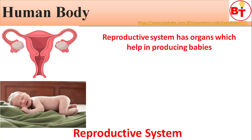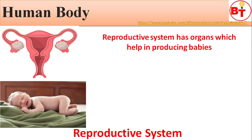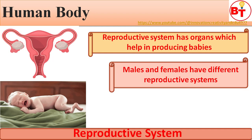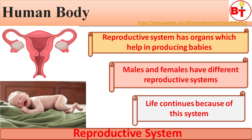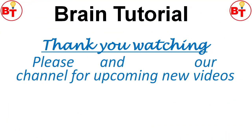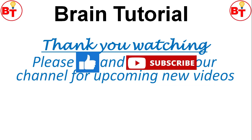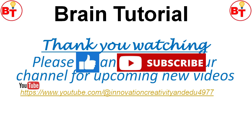Next is the reproductive system. This system has organs which help in producing babies. Males and females have different reproductive systems, and life continues because of this system. Thank you so much friends for watching this video — please like and subscribe our channel if you are new, and share this video with your friends.